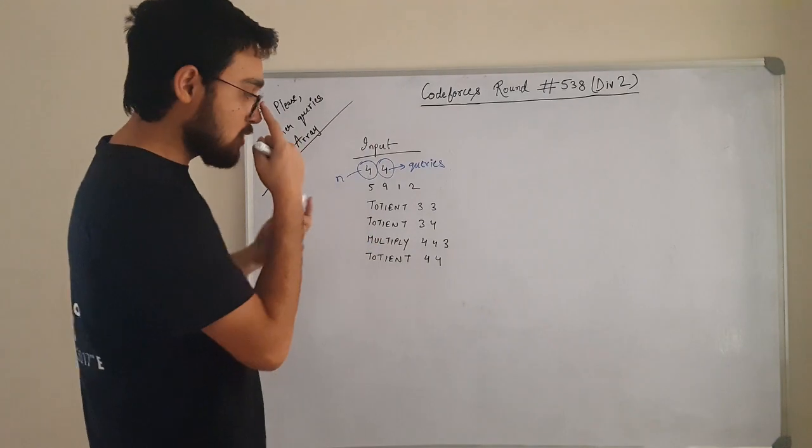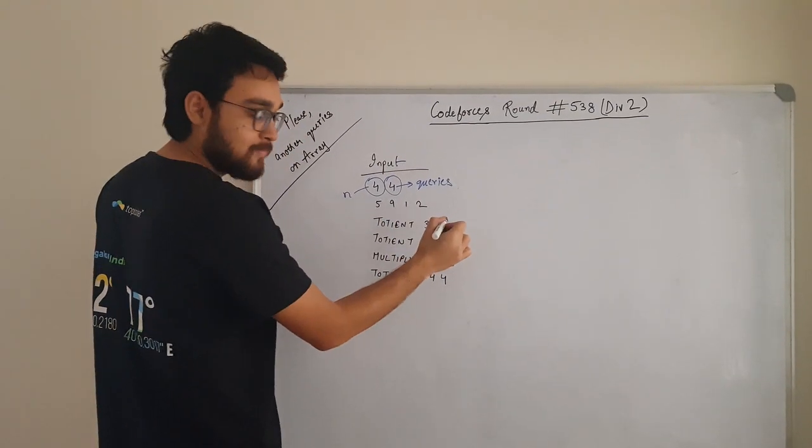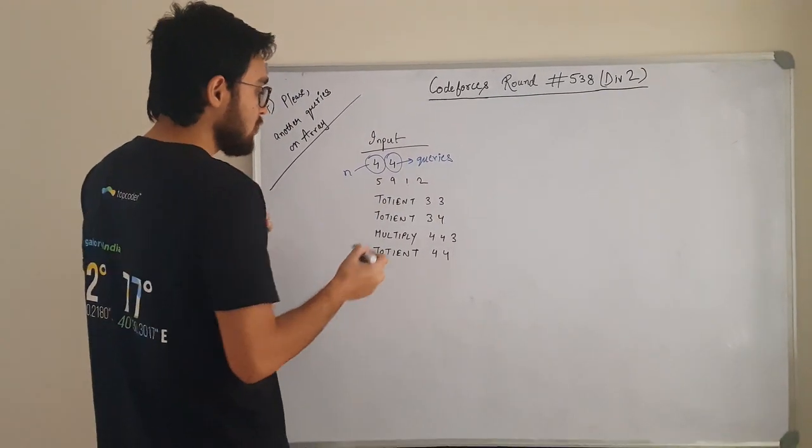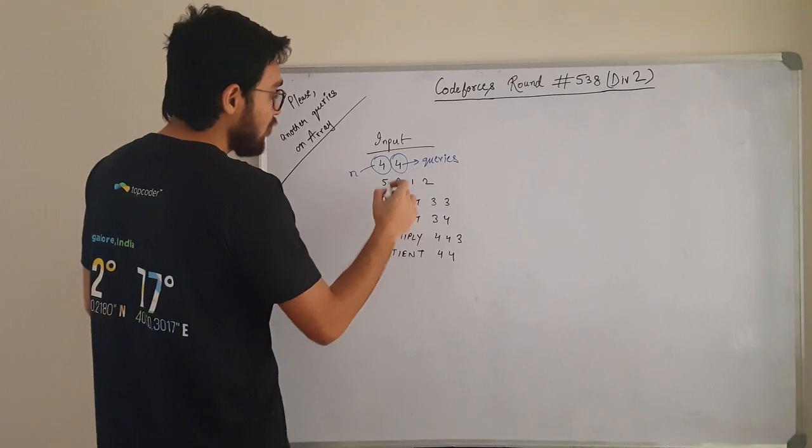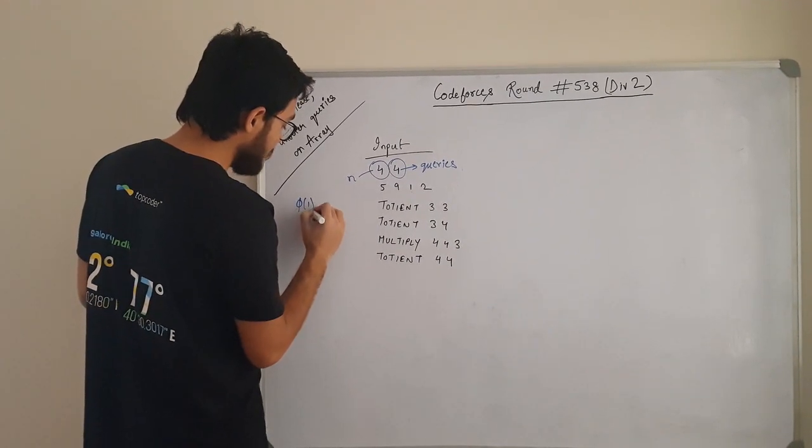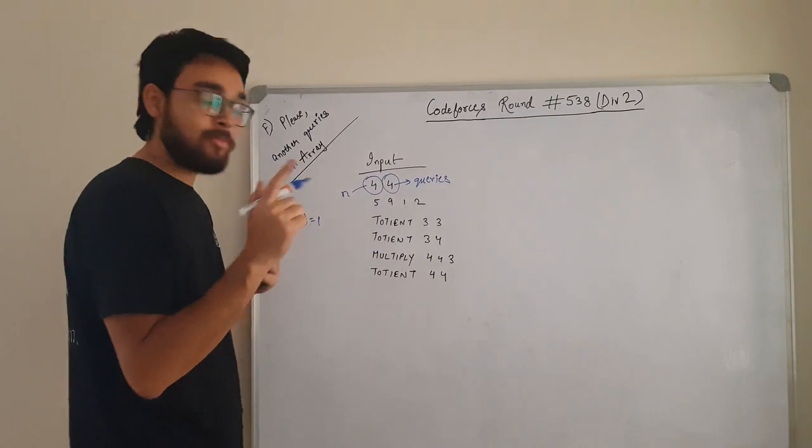Let us see what this is doing. The first query is torsion 3, 3. What is the third element? The third element is 1. This is 1 indexed. So third element is 1. What is the torsion? φ of 1 is 1. So the output of the first query is going to be 1.